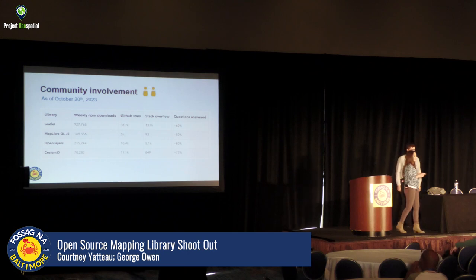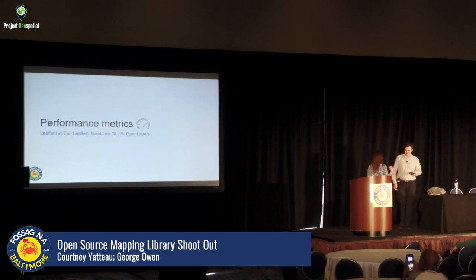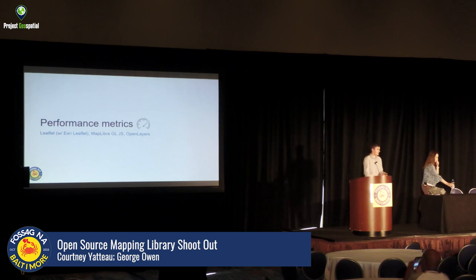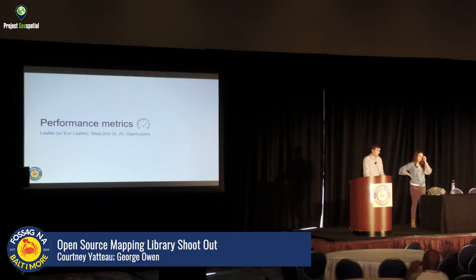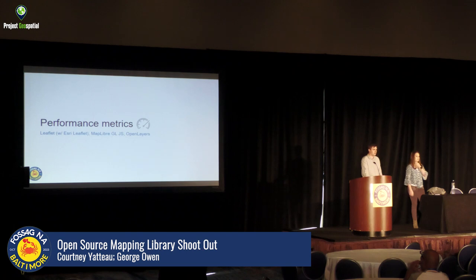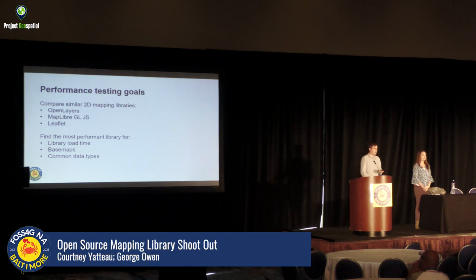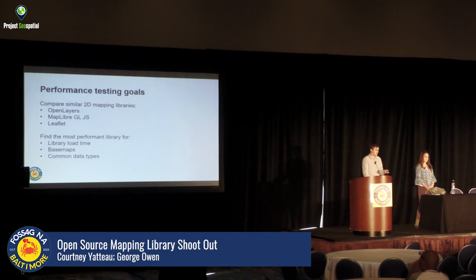Time for performance. Web performance is a really important subject, especially when dealing with heavy content in a web app — it should be a number one priority for any app loading over the internet. Our overall goal is to compare similar 2D mapping libraries: OpenLayers, MapLibre, and Leaflet. Cesium has such different use cases and different performance characteristics that it doesn't make sense to compare it with the others.